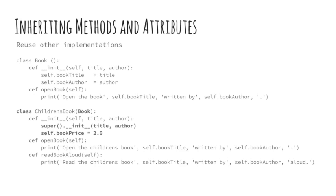Any instance of the children's book class will be able to use new methods from its definition, methods that replace a method defined in its parent's class, and methods that are unique to its parent. An instance of the children's book class uses the initializer __init__ from its parent class Book, the open_book instance method that replaces or overrides the open_book method in the Book class, and the new method read_book_aloud from the children's book class. Attributes from a parent class are inherited by its children as well. However, attributes defined in a subclass are not available for the parent to use. When a method is overridden in a subclass, the parent's version is no longer invoked.